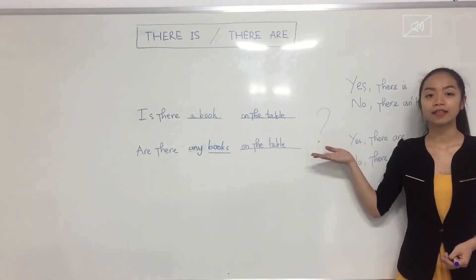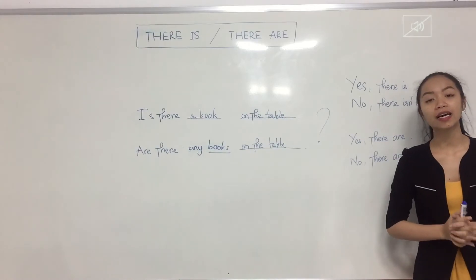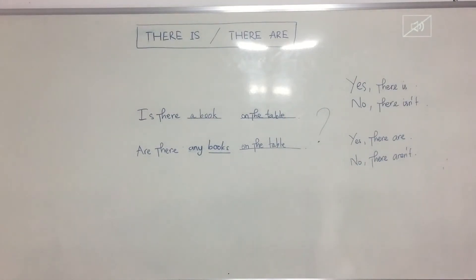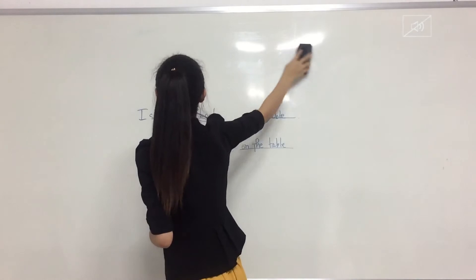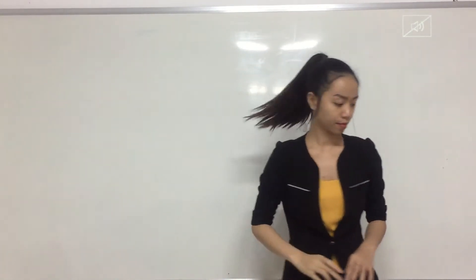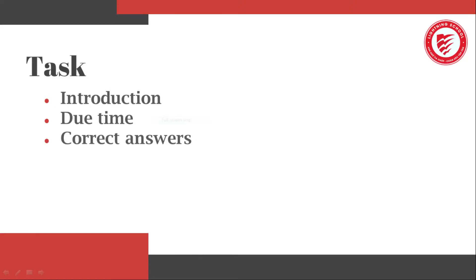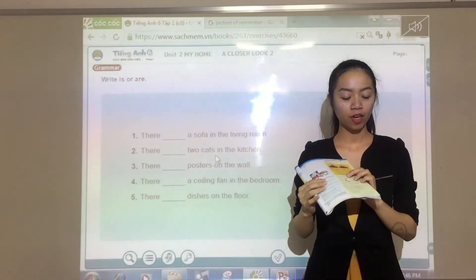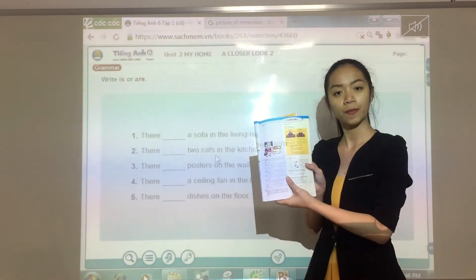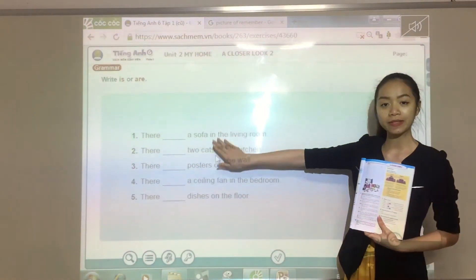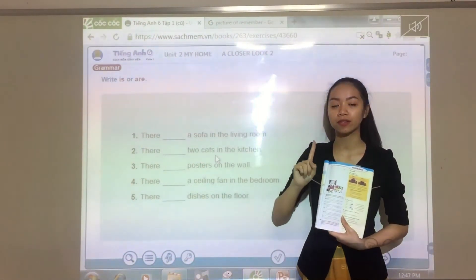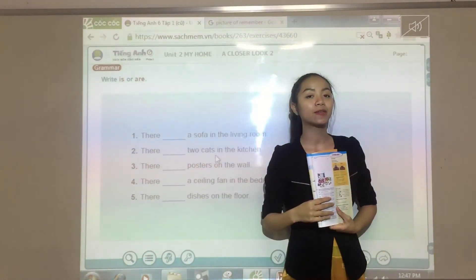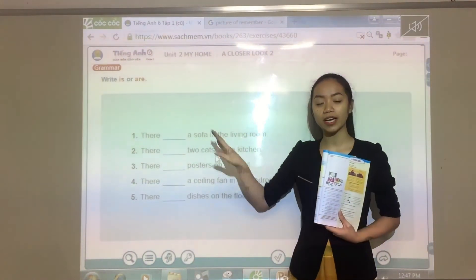So that is all for the grammar, there is and there are. We are moving to task one. Everyone please open your book on page 19, take a look at task 1. There are five sentences, you are going to write is or are. So is is for single noun, so one thing. And are is for plural noun, means many things. You have one minute to write down the answers.